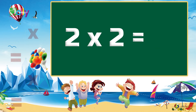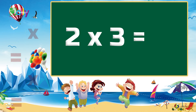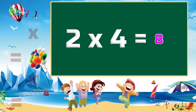Two twos are four. Two twos are four. Two threes are six. Two threes are six.